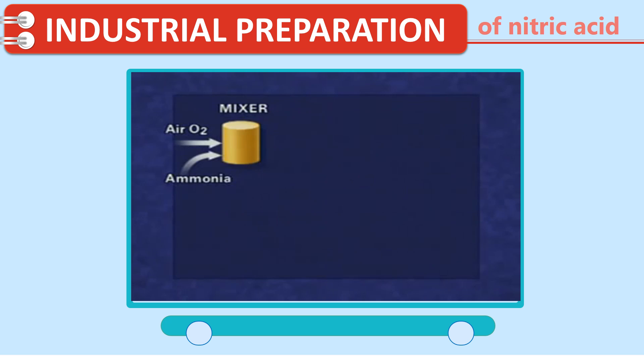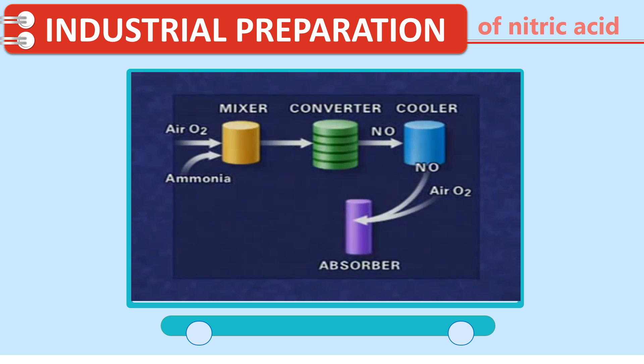The raw materials for making nitric acid are ammonia and air. In the converter, nitrogen monoxide is formed. This is cooled and reacts with more air to produce a mixture of nitrogen dioxide and dinitrogen tetroxide. These gases are absorbed in water to produce nitric acid.